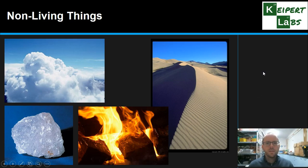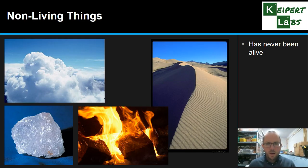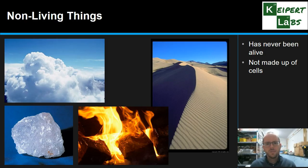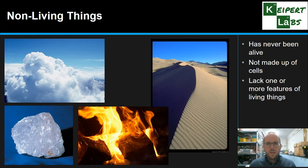Non-living things, however, like clouds and sand, minerals and fire, have never been alive. For something to be non-living it has never been alive — at no point in its existence would it be considered to be living. Non-living things are not made up of cells; we call them material objects. Sand has no cells. There are no cells that come together to make grains of sand, nor the clouds in the atmosphere, nor the water in a river or a lake. Non-living things then lack — they don't have — these seven characteristics.